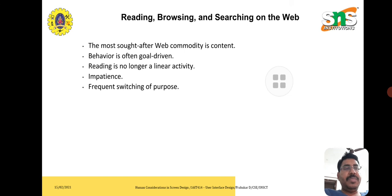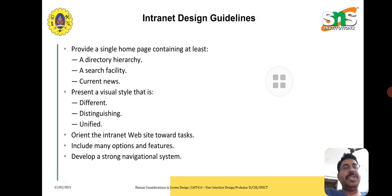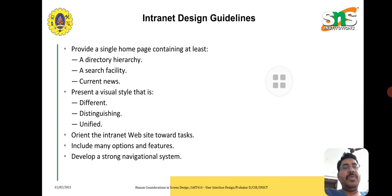So far we have discussed about the interface in the system. Now we move to browsing the web. Behavior is often goal-driven with frequent switching of purpose. For intranet design guidelines, within the organization we should follow these because most people are provided with a virtual private network, and we should provide a strong navigation system.